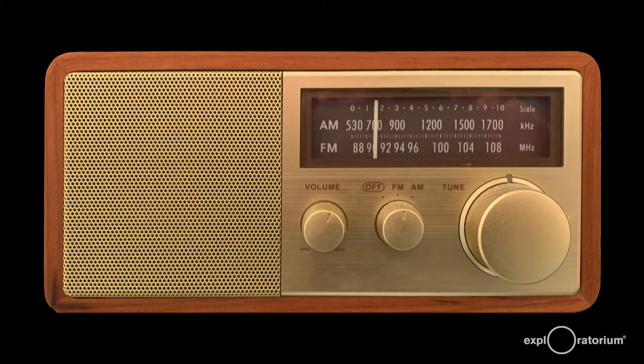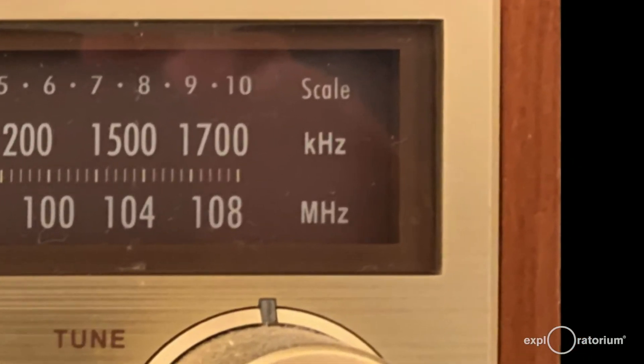You may be familiar with Hertz if you're old enough to have listened to your music on one of these. Kids, this is called a radio. If you look at the right end of the scales, you'll see that AM radio is measured in kHz, or kilohertz, thousands of vibrations per second, and FM is measured in MHz, or megahertz, millions of vibrations per second.